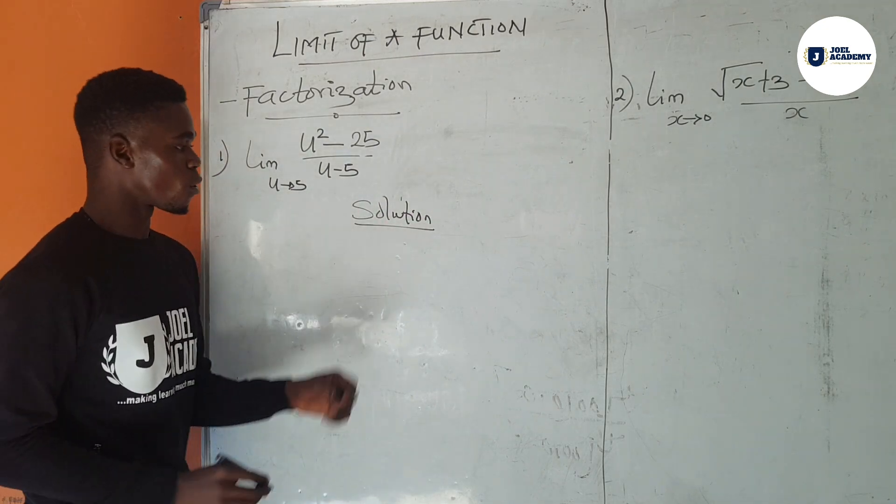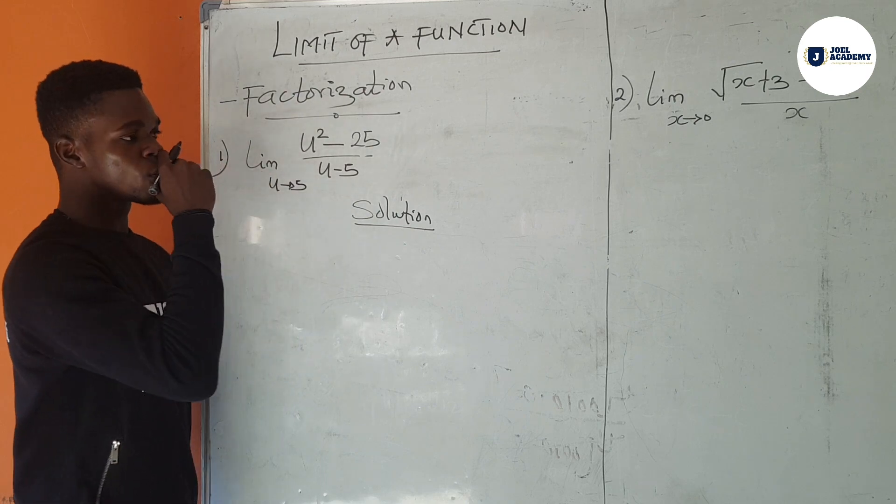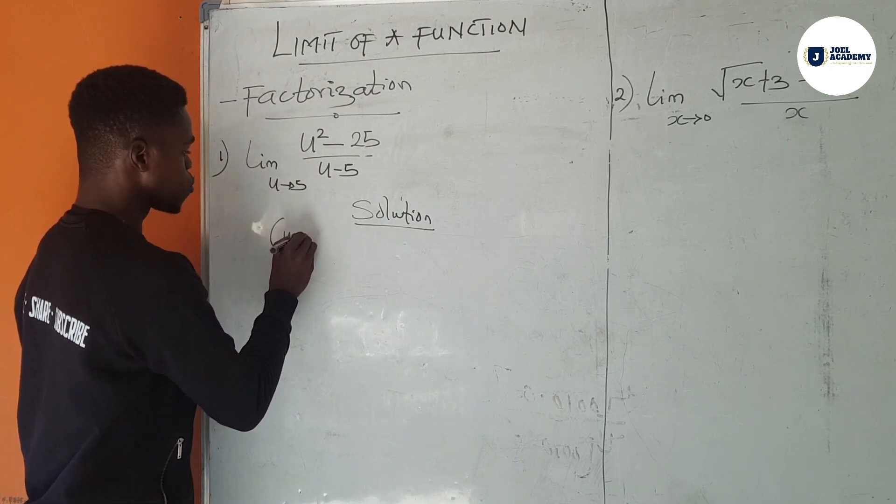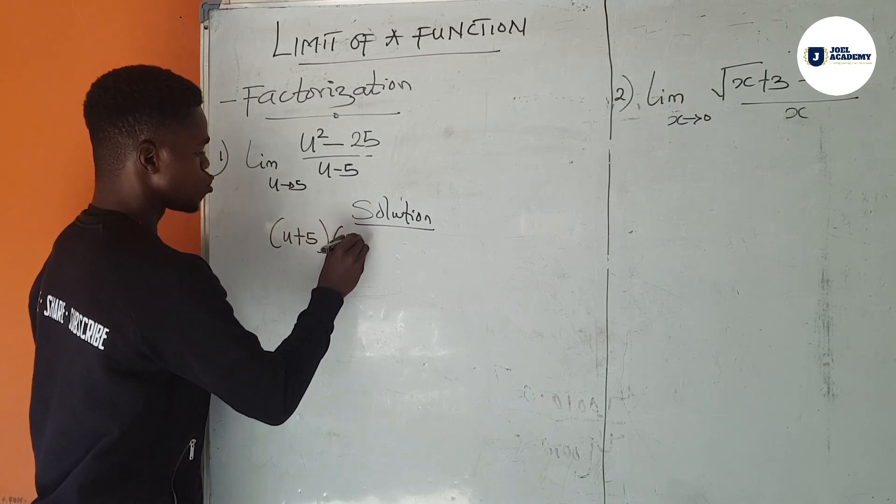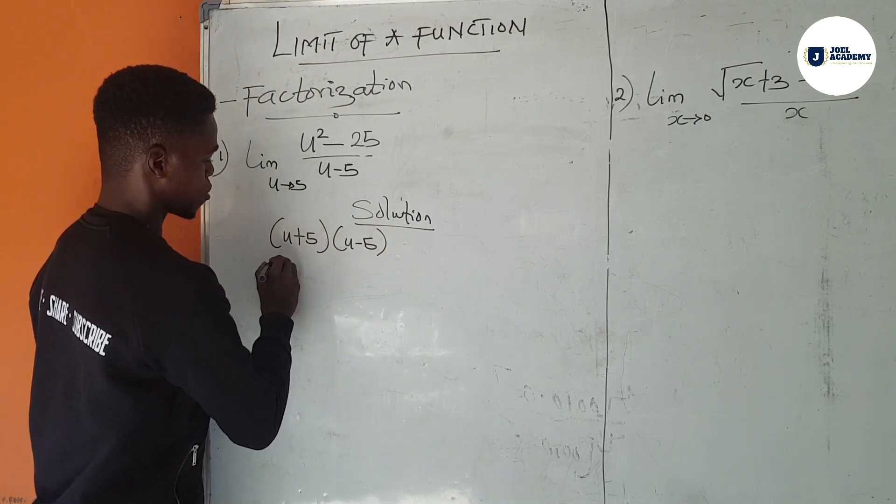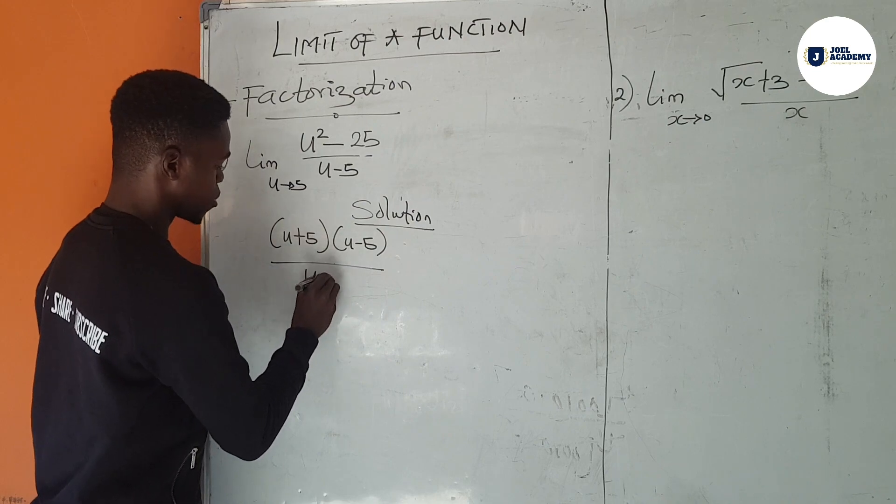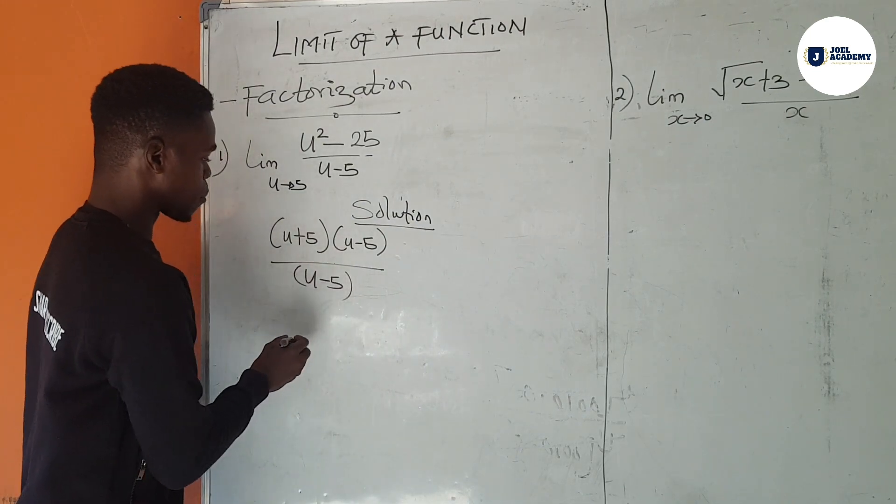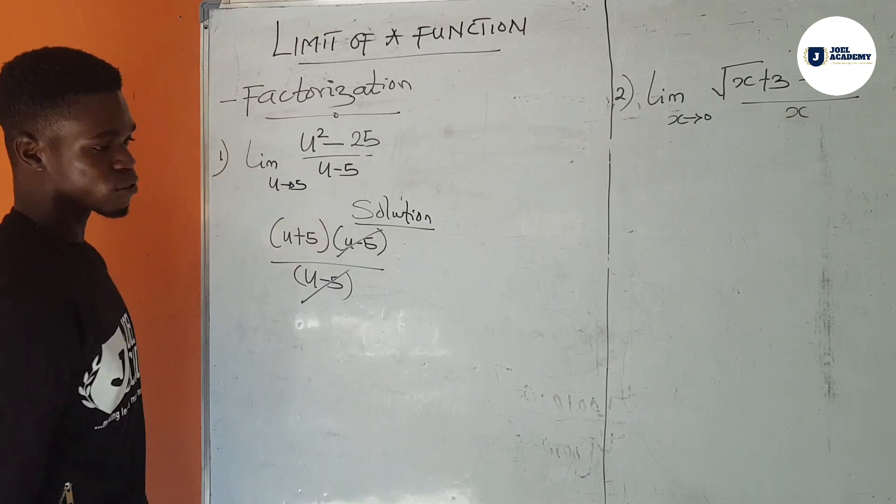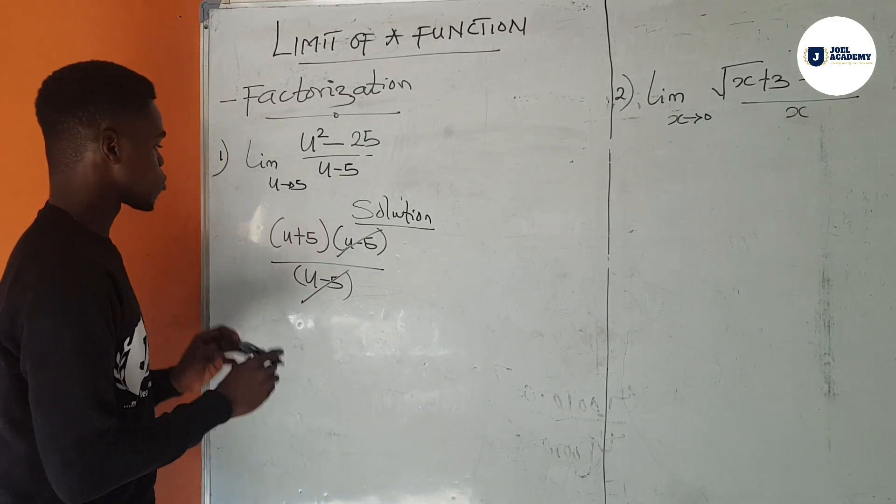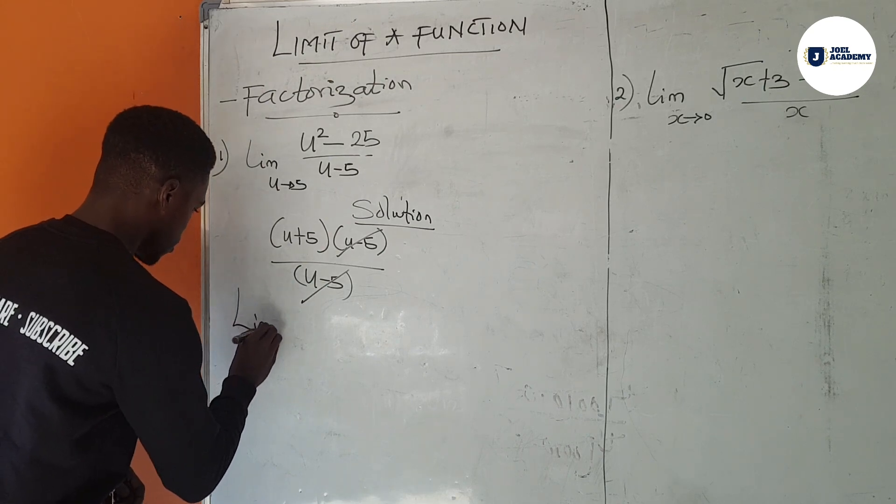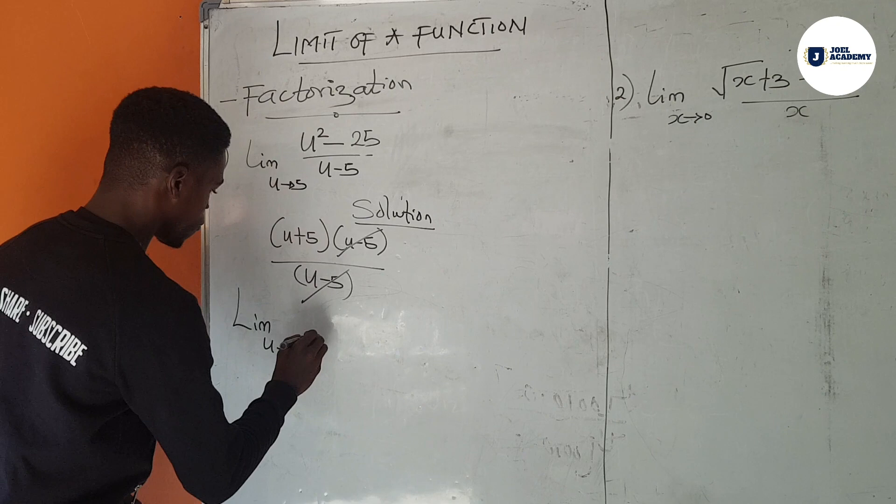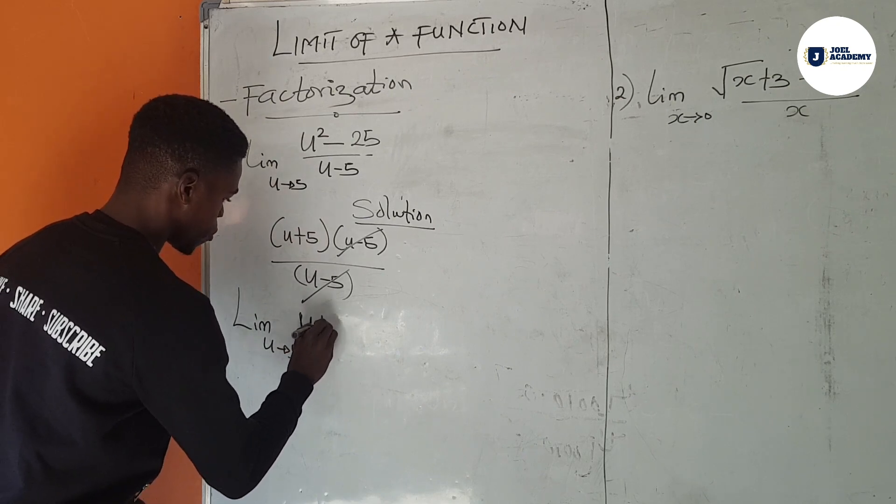If I factorize the numerator, we use what we call the difference of two squares. If we use the difference of two squares, we have u plus 5, u minus 5. And our denominator remains u minus 5. So u minus 5 cancels u minus 5, and we're left with u plus 5. So now we are finding the limit from u tends to 5 of u plus 5.